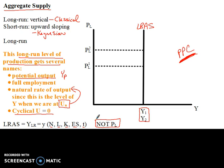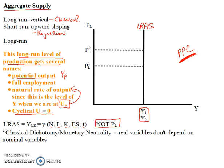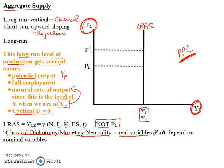This is a very classical economics idea. Sometimes it's called the classical dichotomy, which means that nominal variables — prices — do not affect real variables like real gross domestic product. Prices change; real GDP stays the same. It's also sometimes called monetary neutrality, which is to say that money is neutral — it doesn't change anything real. The real variables do not depend on the nominal variables. You can get a change in a nominal variable, and the real variable stays the same.